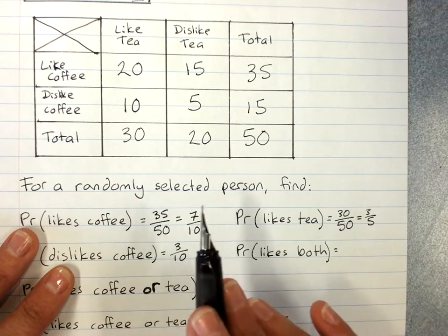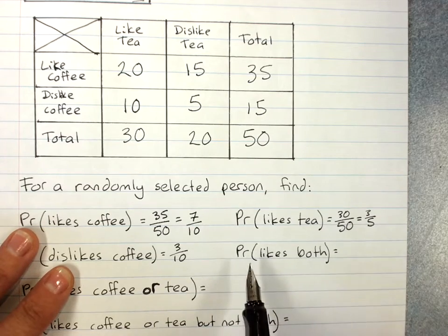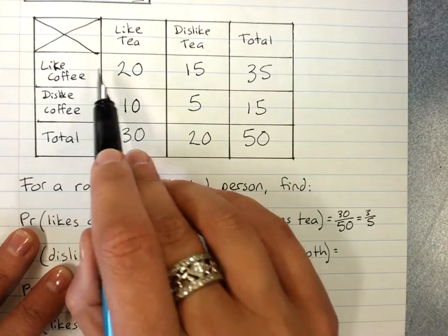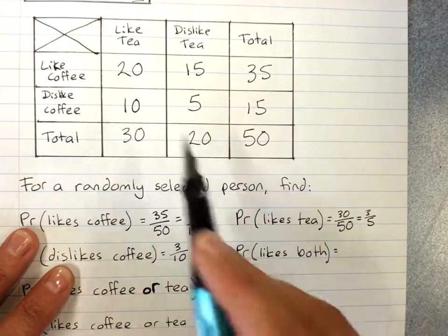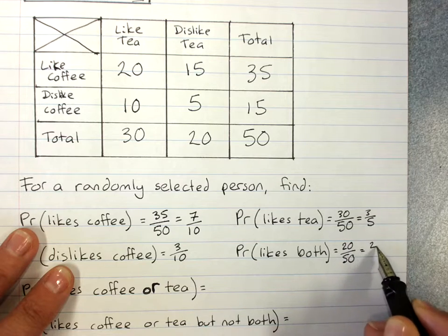Probability that a randomly selected person likes both. Now when I ask for the probability of liking both, I mean only the people who like coffee and tea. 20 out of 50. 2 out of 5.